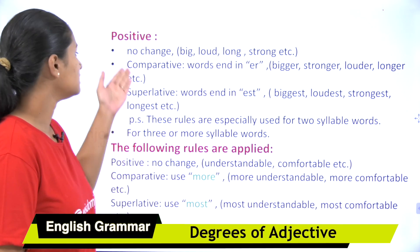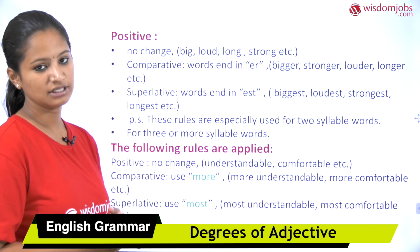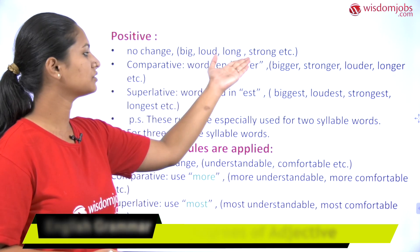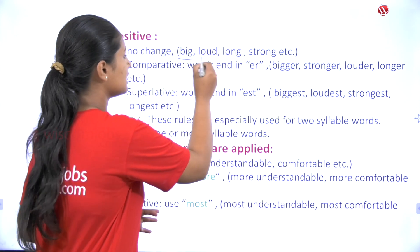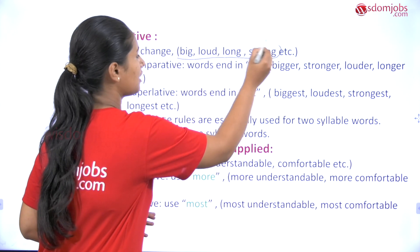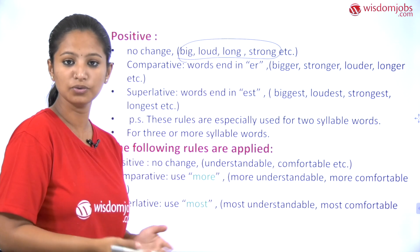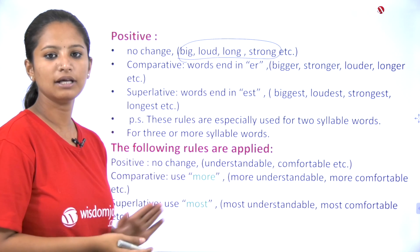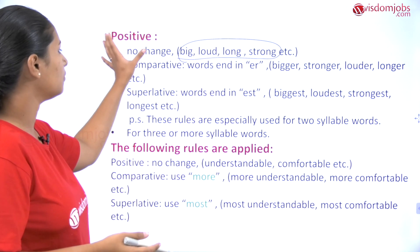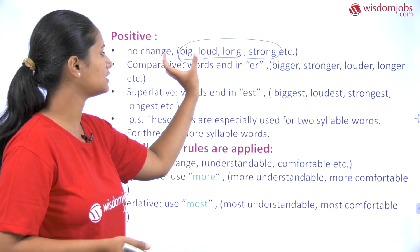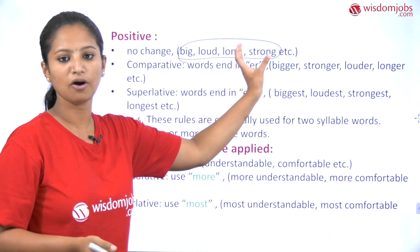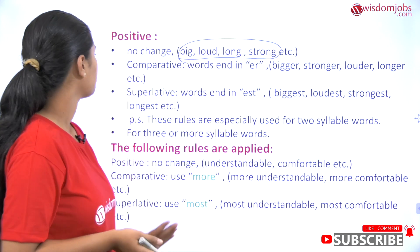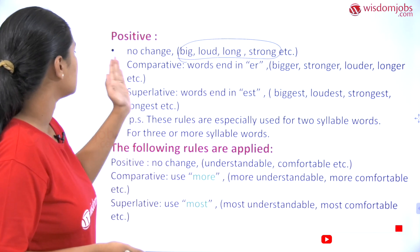Positive degree does not have any change. Words like big, loud, long, and strong are examples of adjectives commonly used in sentences. In positive degree, we use these same words — big, loud, long, strong — with no changes, unlike comparative and superlative degrees.